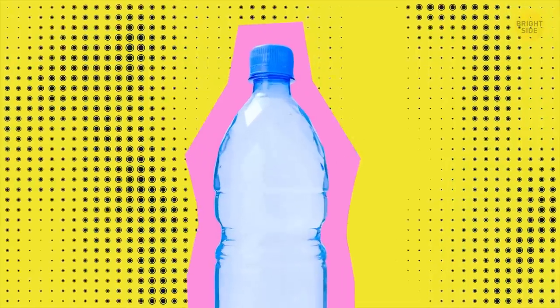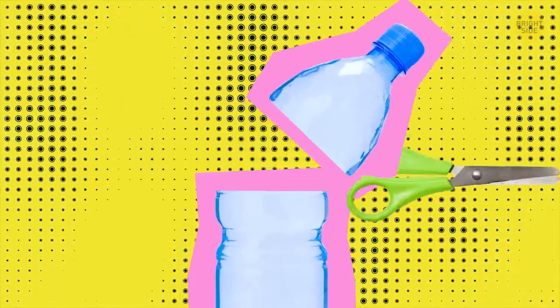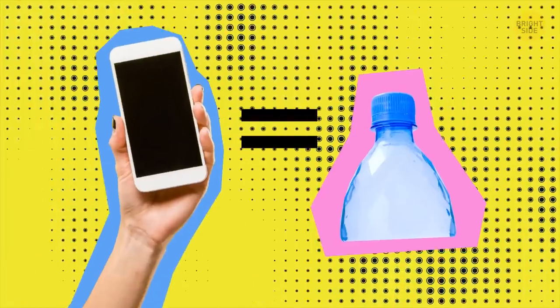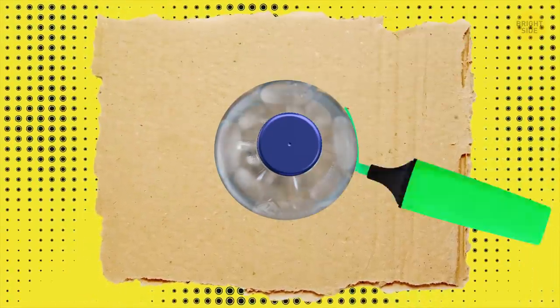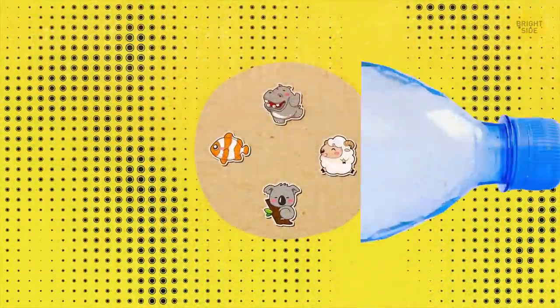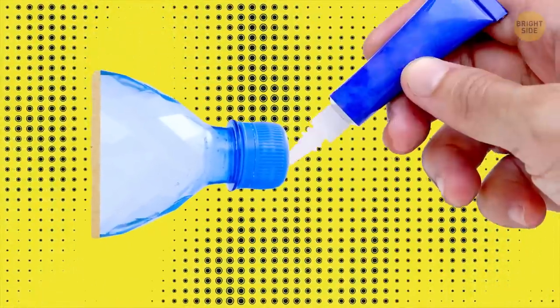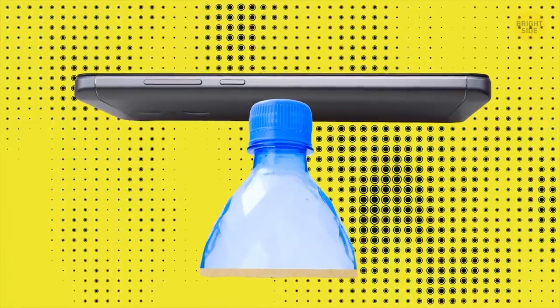A plastic bottle can also provide you with a pop socket material. Remove its top section. It should be the size of your future accessory. Mark the outlines of its widest part on a piece of paper or cardboard. Decorate this piece with a nice pattern, stickers, beads, or whatever you like. Glue it on top of the bottle section. Then glue the bottle cap to your phone case.